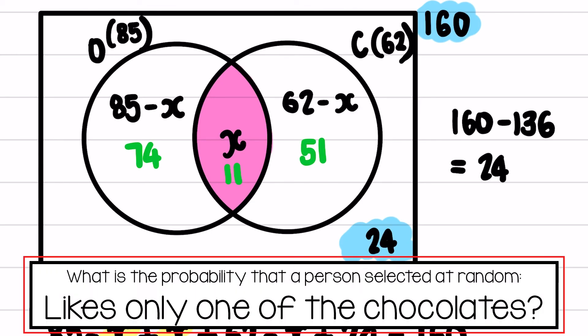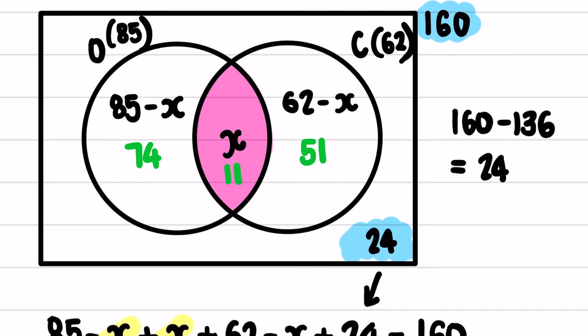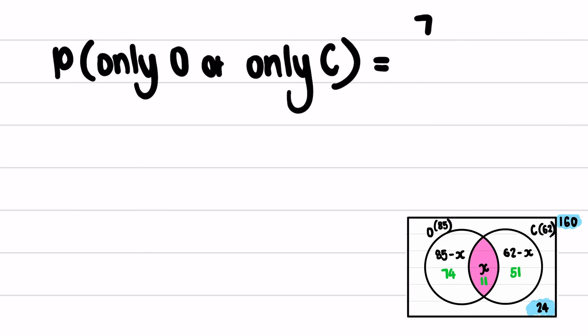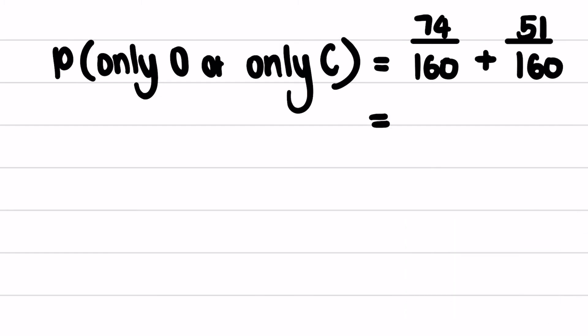The question asks: what is the probability that a person selected at random likes only one of the chocolates? Only one chocolate means orange only or caramel only, excluding both the intersection and the outside region. So the probability of only orange or only caramel equals 74 over 160 plus 51 over 160, which is 125 over 160, simplifying to 25 over 32.